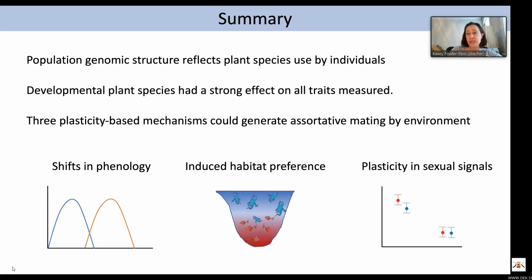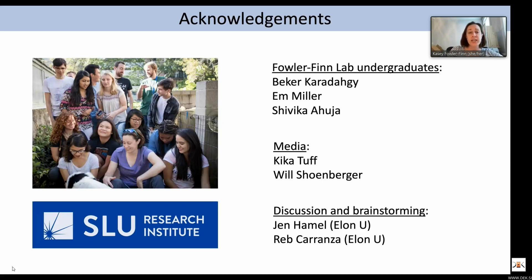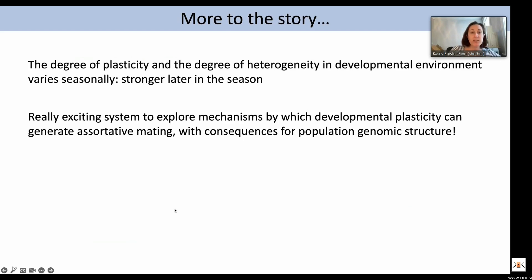I want to give acknowledgements — Jen Hamill has been really critical in discussion and brainstorming and is collaborating on resulting projects. There is more to the story: the degree of plasticity and the degree of heterogeneity in the developmental environment varies seasonally, with stronger patterns found later in the season. Overall, this is a really exciting system to explore mechanisms by which developmental plasticity can generate assortative mating with consequences for population genomic structure, and it is also temporally variable.